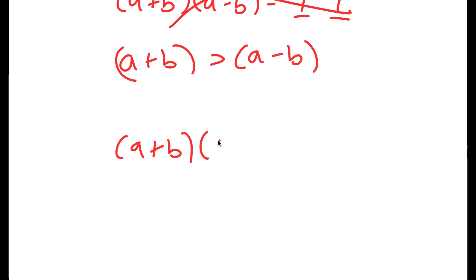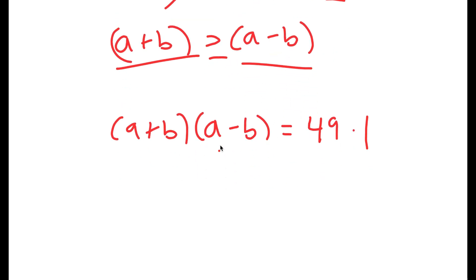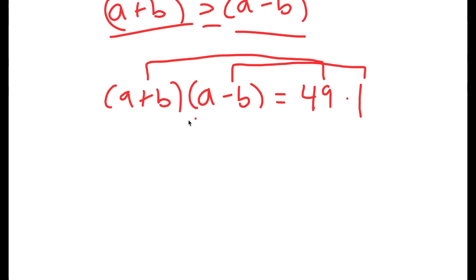Meaning we're going back to a plus b times a minus b equals 49 times 1. So because a plus b is greater than a minus b, we can say that a plus b equals 49 and a minus b equals 1.